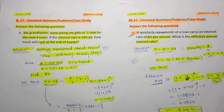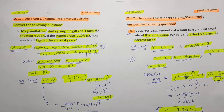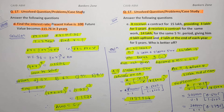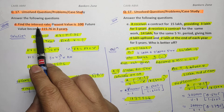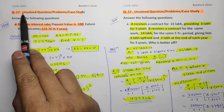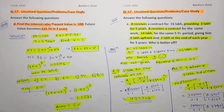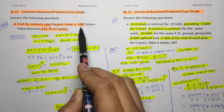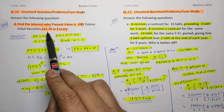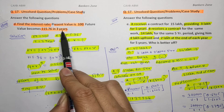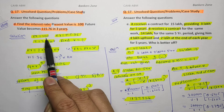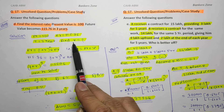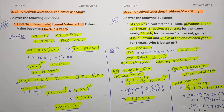Now moving to question number 17D — finding the interest rate, which is very important. We have been given: Present Value = 100, Future Value = 115.76, and time period = 3 years. We have to find the rate of interest.